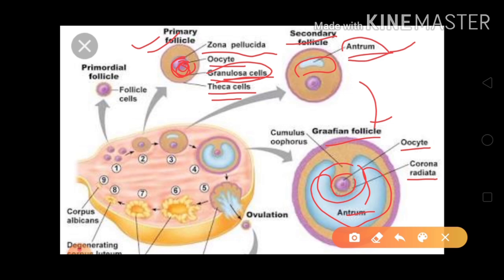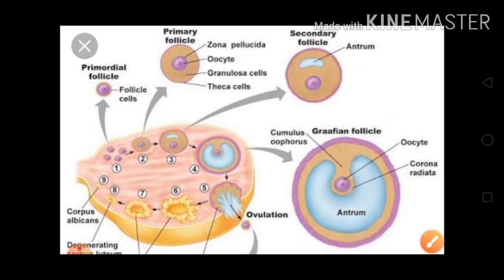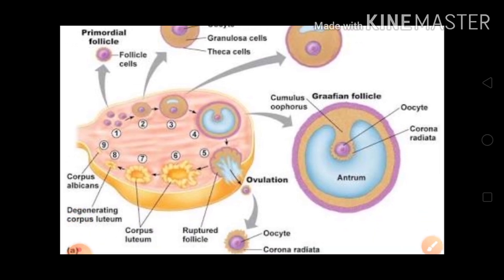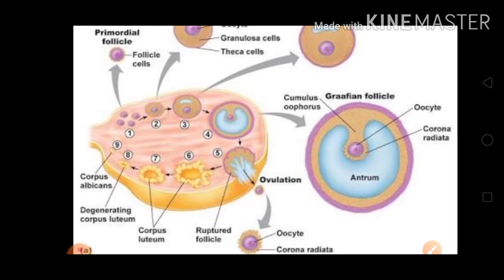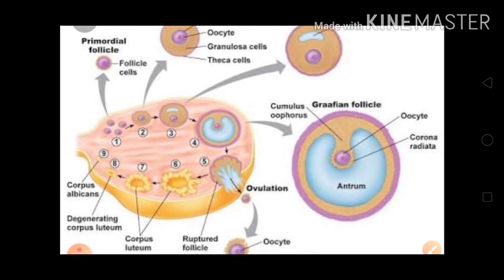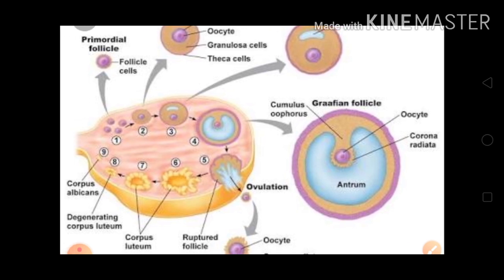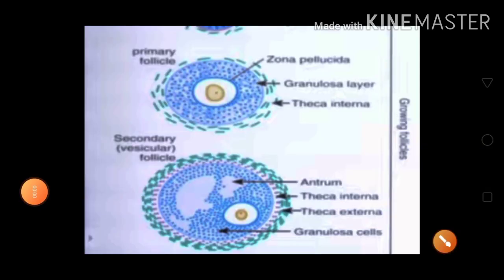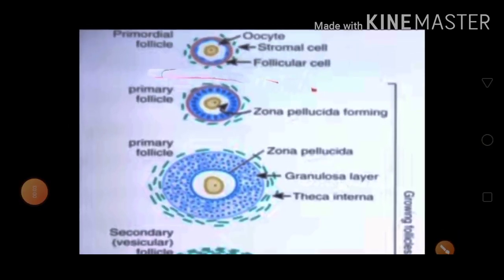Secondary follicles convert into the tertiary or mature Graafian follicles. In the mature Graafian follicle, the oocytes have a layer called the corona radiata around them. The antrum inside the Graafian follicle becomes very large. The mature Graafian follicles then rupture and the ovum is released — that process is called ovulation.